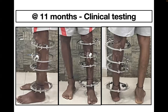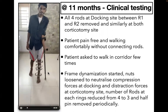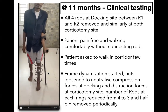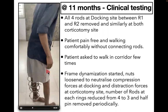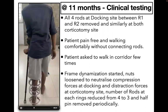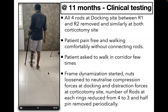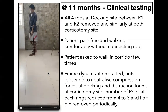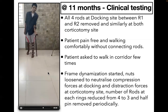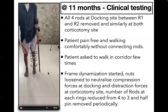This is a clinical picture of the clinical testing: all four rods removed and patient asked to walk. Once stability of the regenerate and docking site is confirmed, the process of dynamization begins — compression and distraction forces are neutralized by loosening of nuts at the corticotomy and docking sites. Number of rods is progressively reduced from 4 to 3, and half-pins are removed periodically to avoid the stress-riser effect at the time of frame removal.